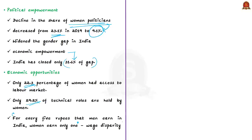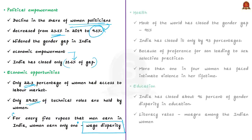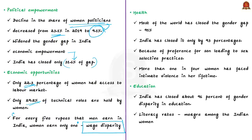Indian women's earnings are only 20.7 percent of men's earnings. This has resulted in India's downgrading by 3 percentage points in terms of offering men and women equality in economic participation. These constraints translate into poor financial empowerment of women.